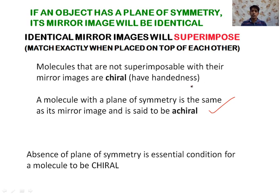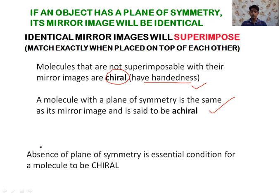On the other hand, some molecules do not have a plane of symmetry; their mirror images are not superimposable on them, and such molecules are known as chiral. Chiral molecules have the property of handedness — we can identify which is the left part and which is the right part. Objects that are non-superimposable on their mirror image are known as chiral objects. The absence of a plane of symmetry is an essential condition for a molecule to be chiral.